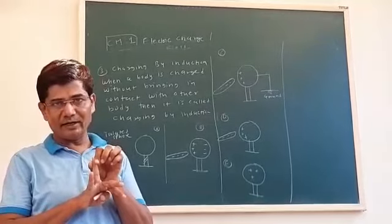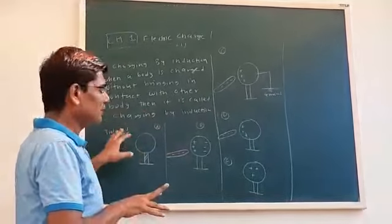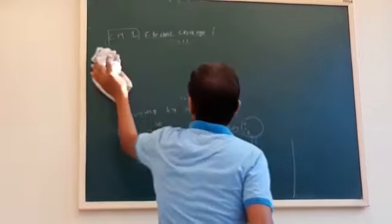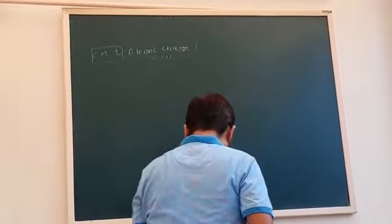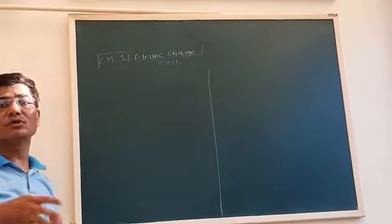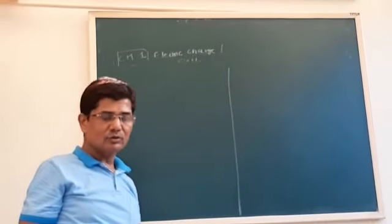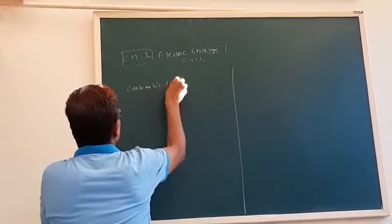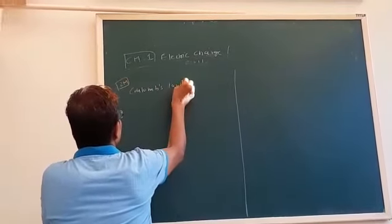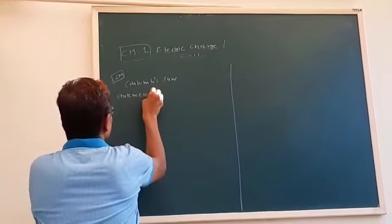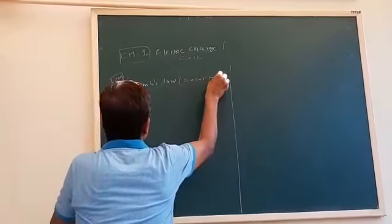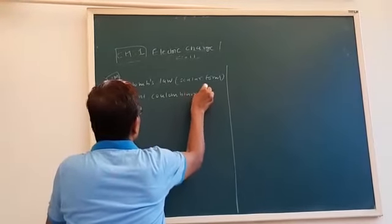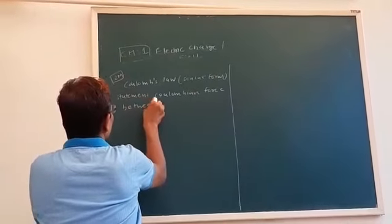To summarize the three types: first was charging by friction, second was charging by conduction in which there is sharing of charge, and the third is charging by induction in which there is no physical contact. Next we have to see about Coulomb's law, which is the first long question of this lesson. The Coulombian force — we will see the law in scalar form.